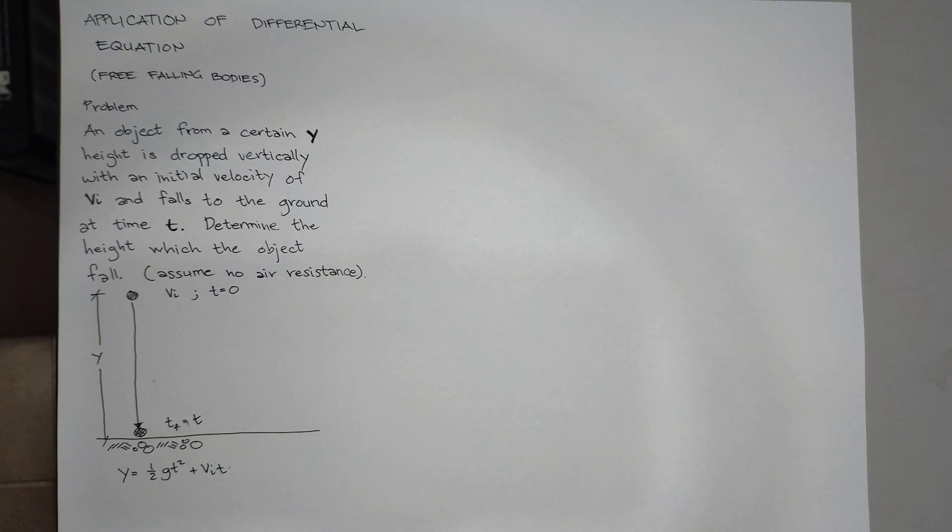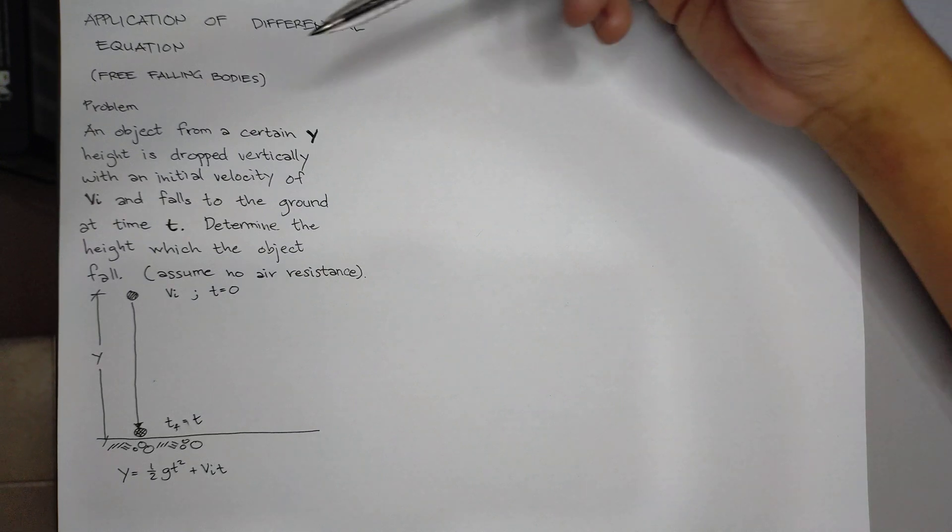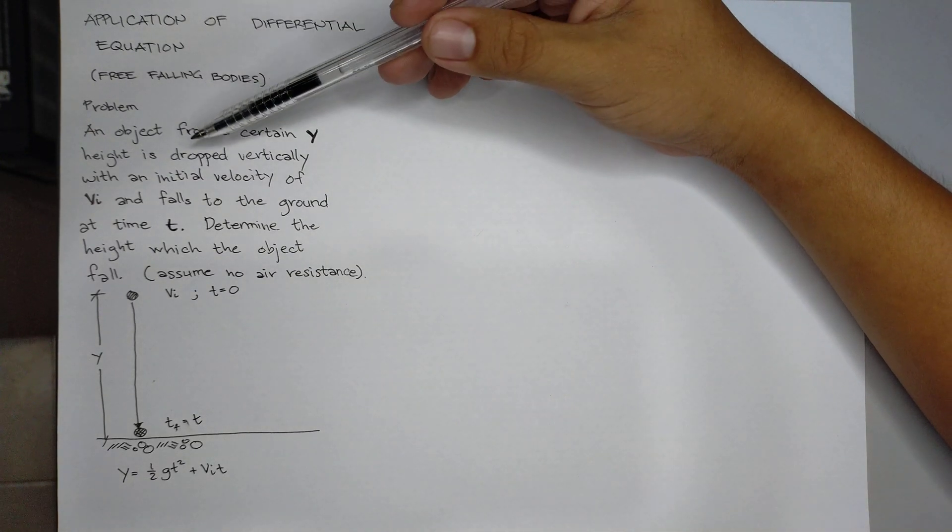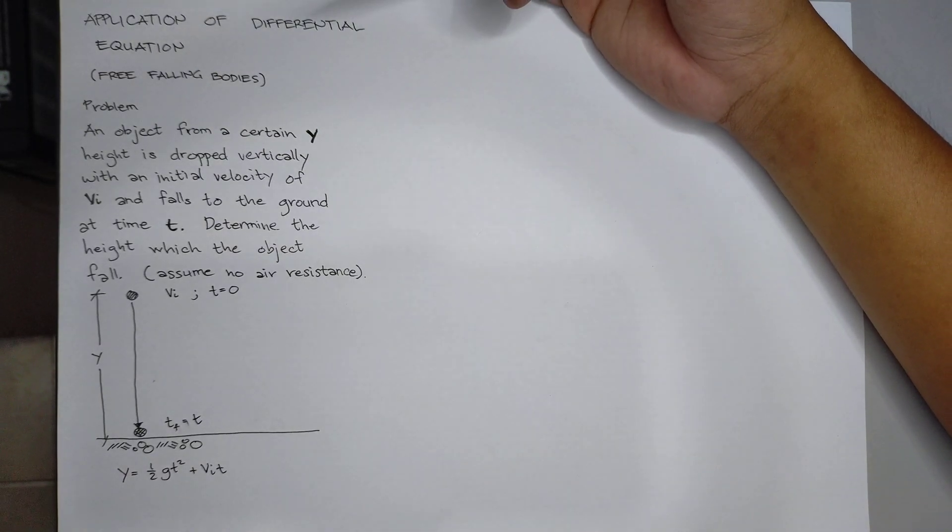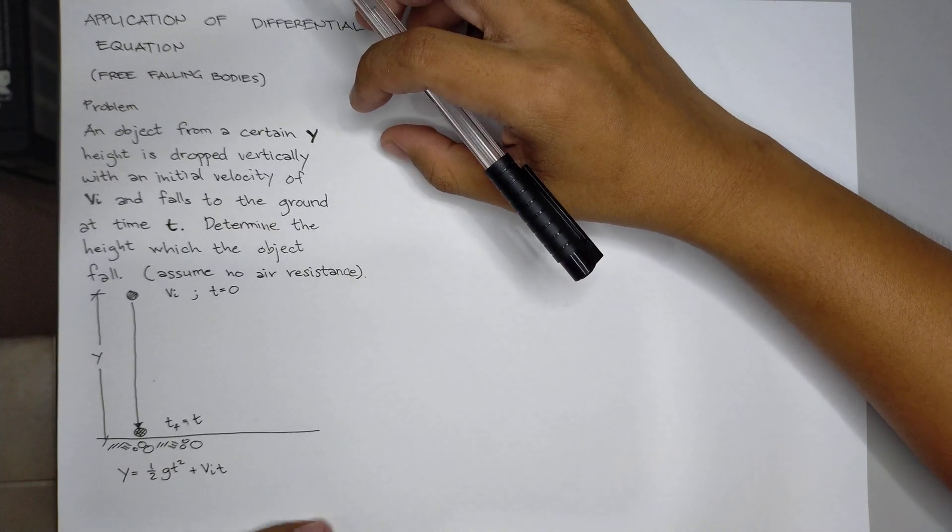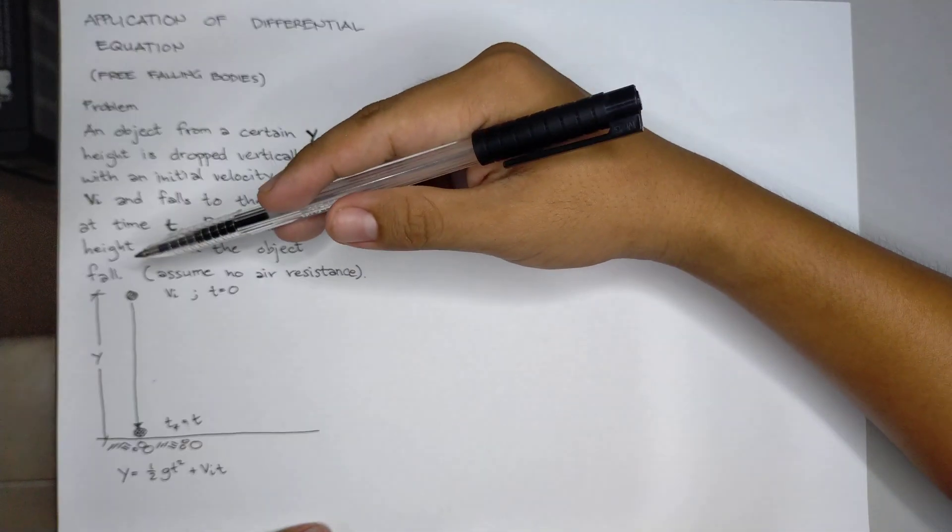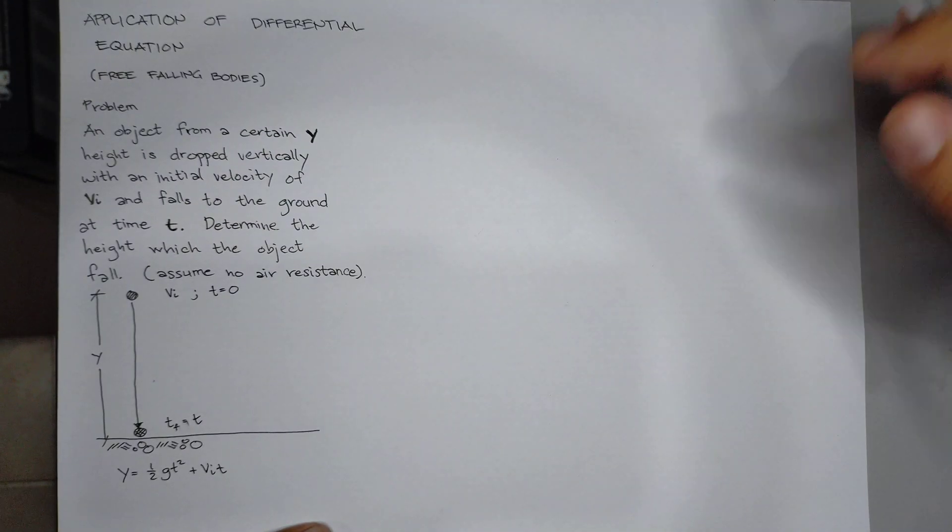From our problem here, an object from a certain y height is dropped vertically with an initial velocity of vi and falls to the ground at time t. Determine the height which the object falls. Assume no air resistance.